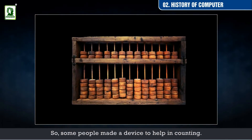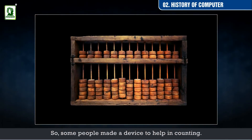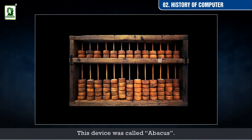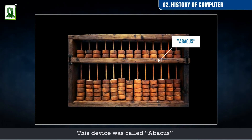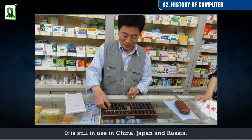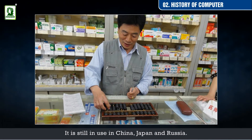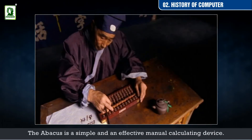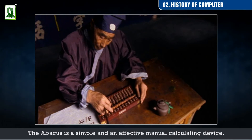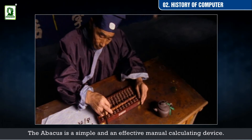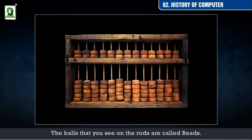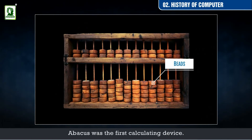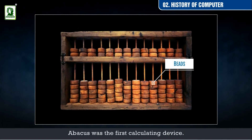This device was called the abacus. It is still in use in China, Japan, and Russia. The abacus is a simple and effective manual calculating device. The balls that you see on the rods are called beads. Abacus was the first calculating device.